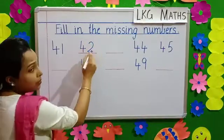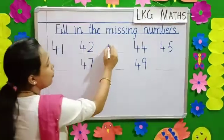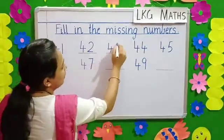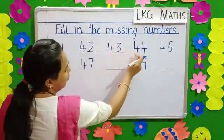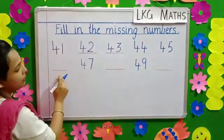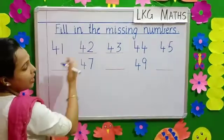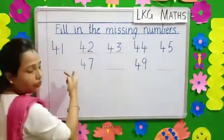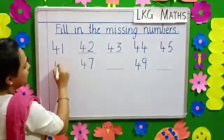What comes after 42? 43, 44, 45. And now, we have another blank. So, here we will write, what comes after 45? 46.